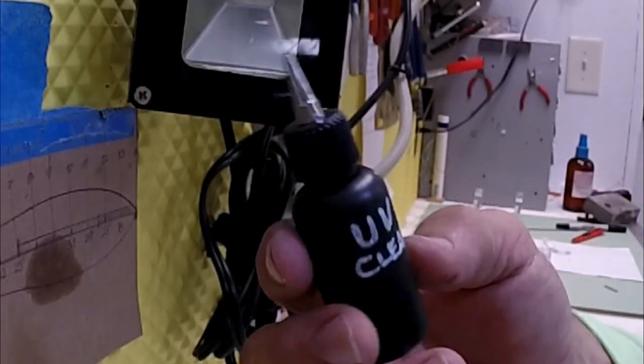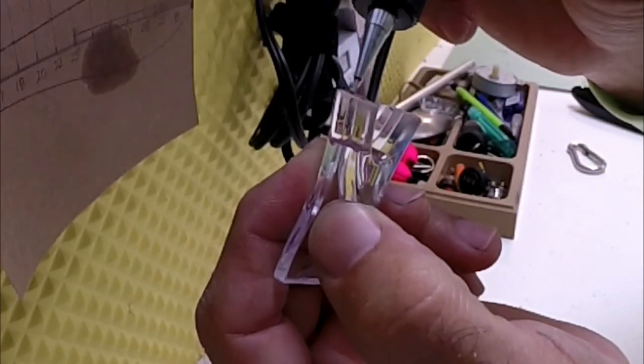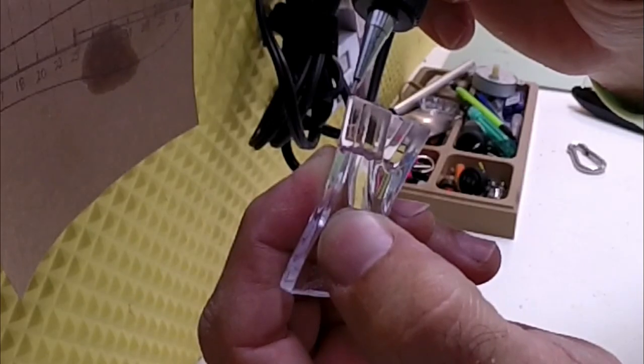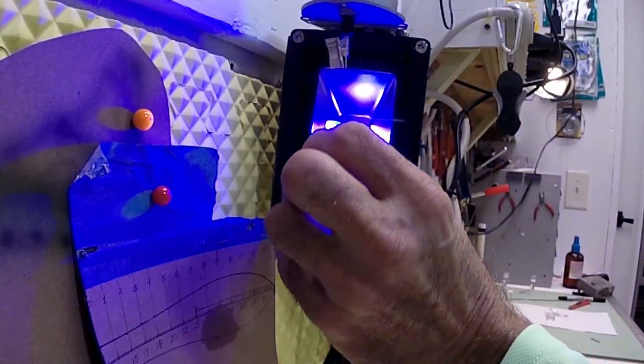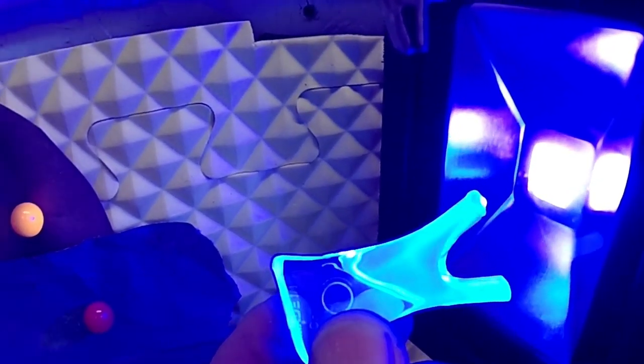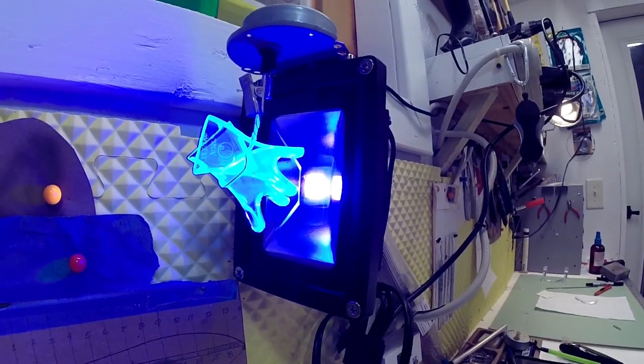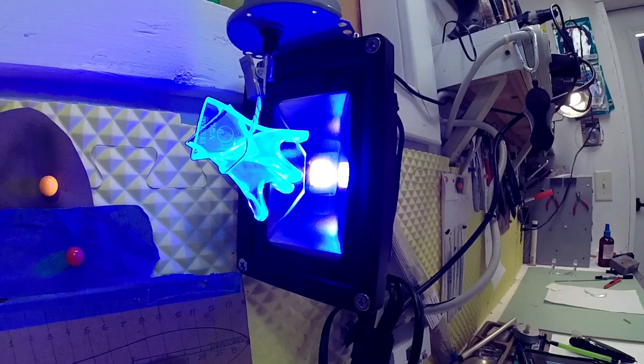Okay, let's use some of this UV clear to give it a little polish clear coat. I'm going to let that set for about 5 to 10 minutes just to be sure it's good and hard.